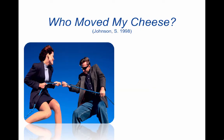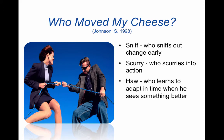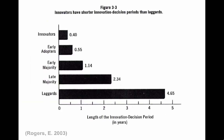With innovations growing in the 1990s, Who Moved My Cheese by Spencer Johnson became a really popular book. It's about four characters: Sniff, who likes to sniff out change early; Scurry, who scurries into action; Haw, who learns to adapt in time when he sees something better; and Him, who denies change as he fears it will lead to something worse. These four characters are also seen in Everett Rogers' book on the diffusion of innovations. Sniff represents innovators or early adopters, Scurry the early majority, Haw the late majority, and Him the laggards.